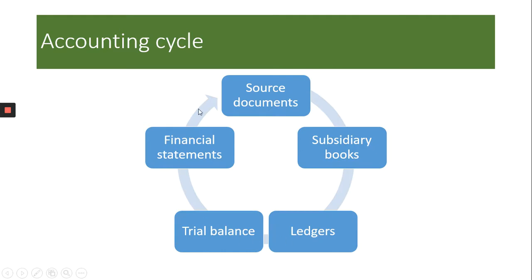This is the accounting cycle. The first thing that is done after a transaction is it is recorded in the source documents. Then after the source documents, the subsidiary book, then the ledger, then the trial balance, and then finally the financial statement. We are going to talk about all five of these stages.